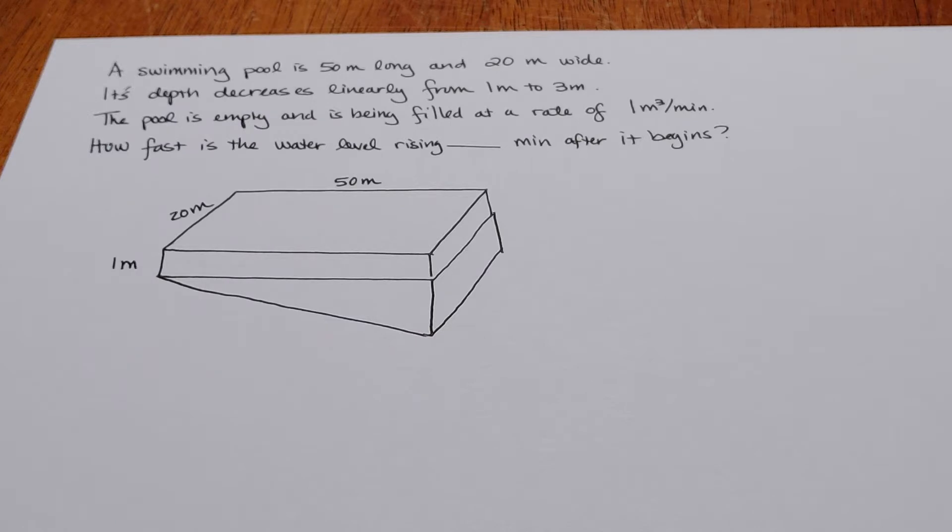Its depth decreases linearly from 1 meter to 3 meters. The pool is empty and is being filled at a rate of 1 cubic meter per minute. How fast is the water level rising at a particular minute after it begins?